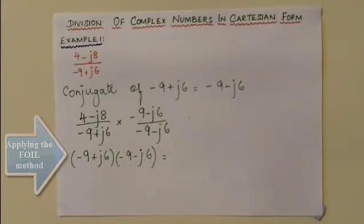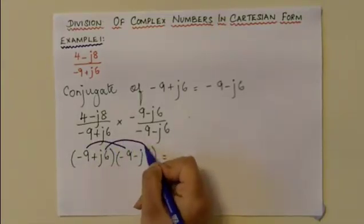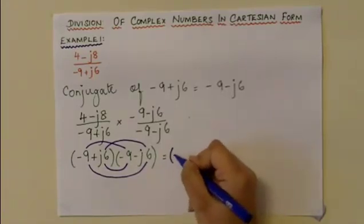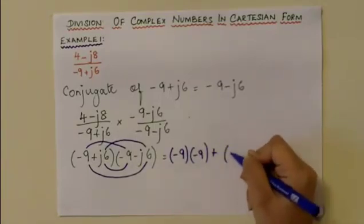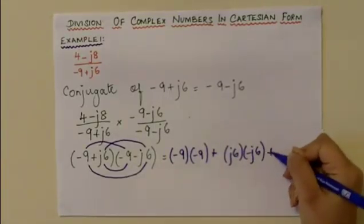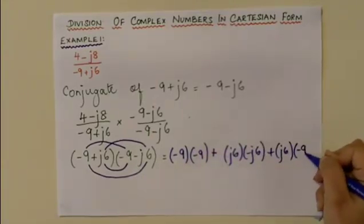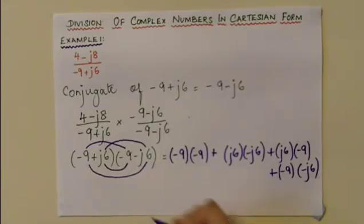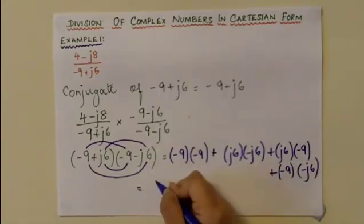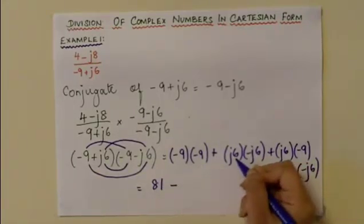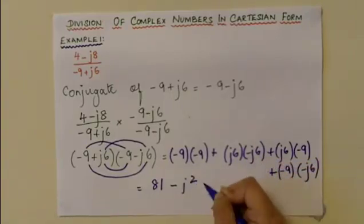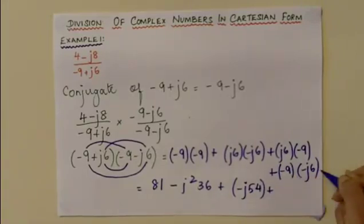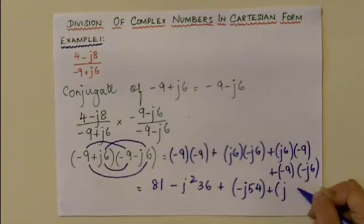Using the FOIL method: multiplying the first terms, multiplying the outsides, multiplying the insides, and then multiplying the last terms. Expanding the brackets, we have (-9)(-9) for the first terms, then the outside and inside cross terms (j6 times -9 and -j6 times -9), giving us: 81 - j²(36) - j54 + j54.